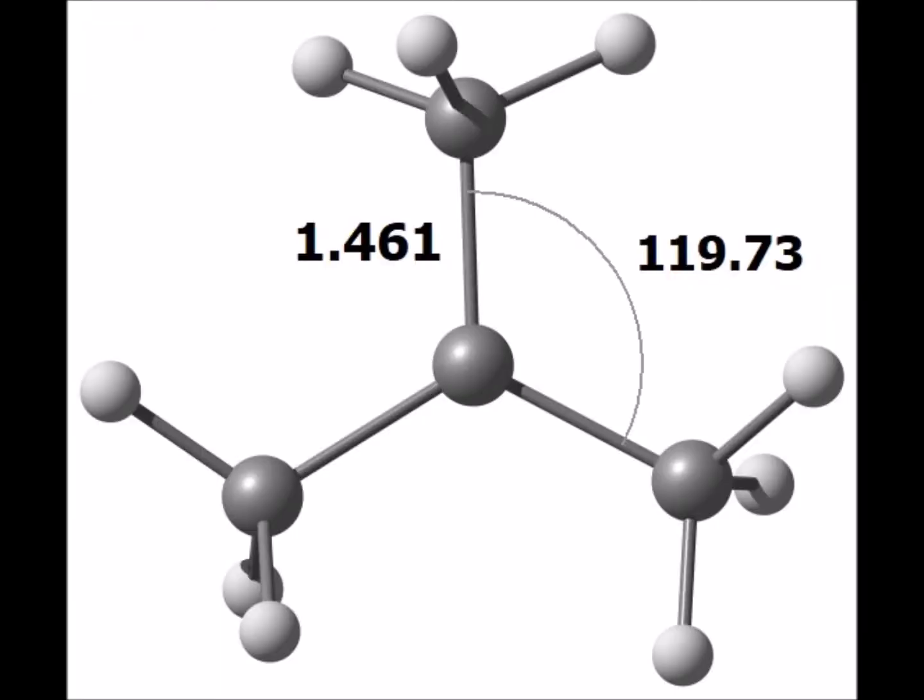As our final example, we have the tertiary-butyl carbocation, which is a tertiary, so therefore very stable, carbocation. The four carbons of the carbocation are all in a plane, as the central carbon is sp2 hybridized, and we see that the bond angles amongst the carbon atoms are within the accuracy of the calculation, exactly 120 degrees. And therefore, we have trigonal symmetry around the central carbon atom.